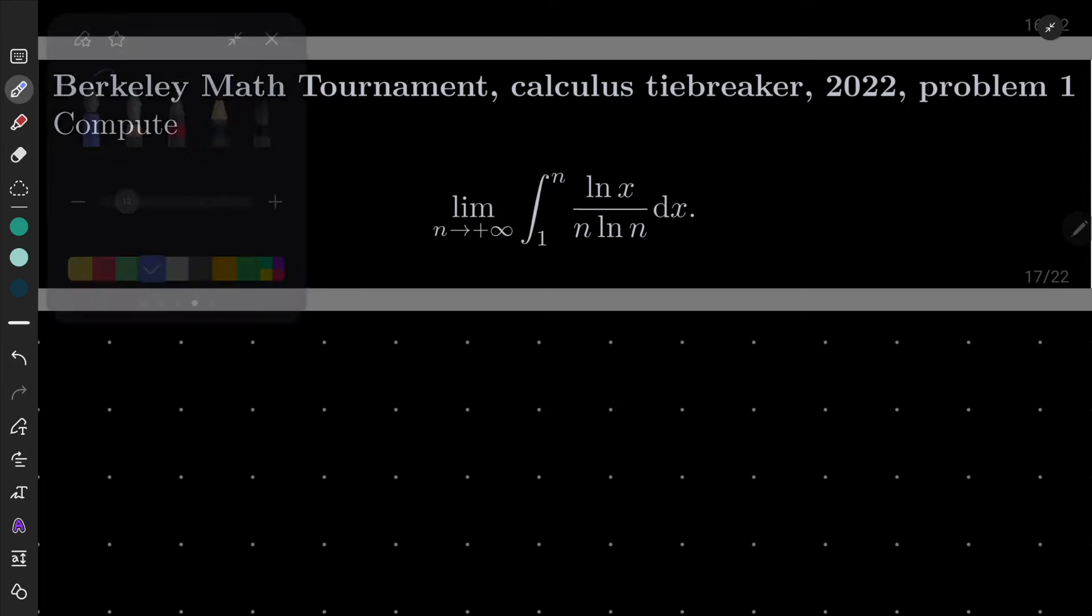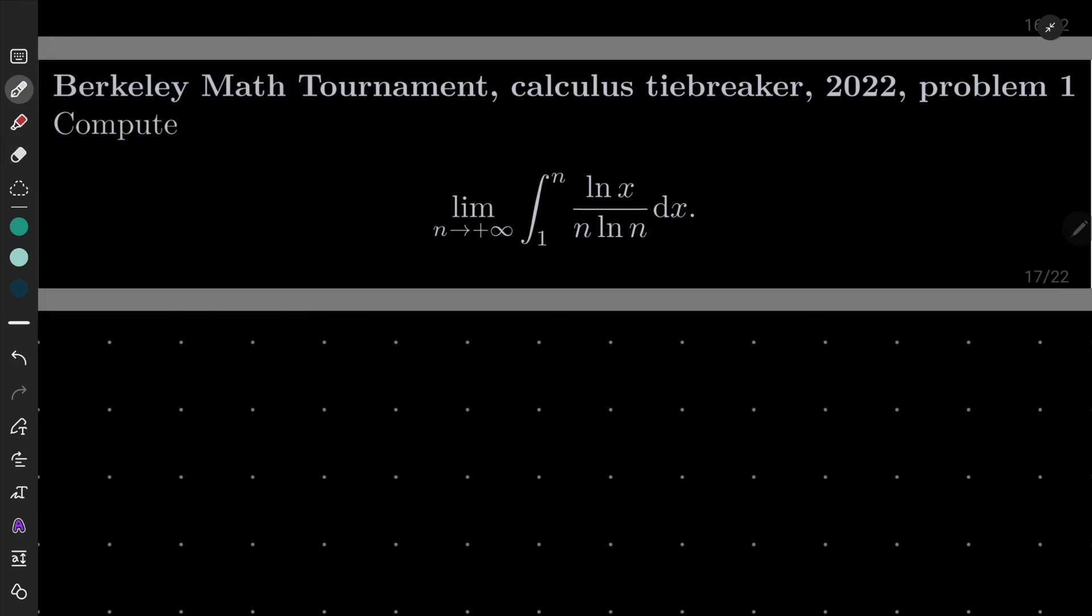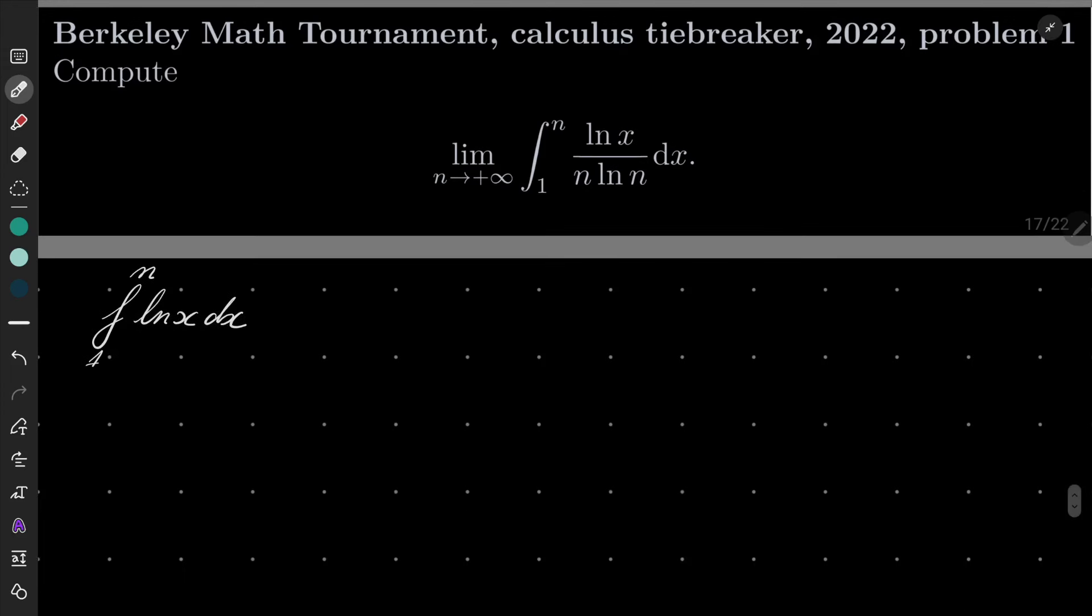Okay so here comes my solution. As I suggested, let's start with finding integral from 1 to n of natural log of x dx. How can we do it? Well it's an ideal integral for integration by parts.